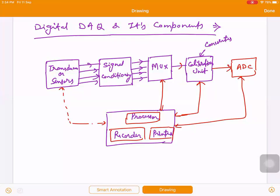So this is the flow. So these are the components which are required by the DAQ system. Clear? So one by one we see components functioning.